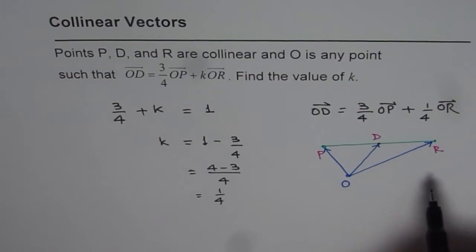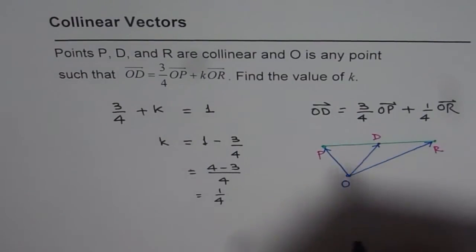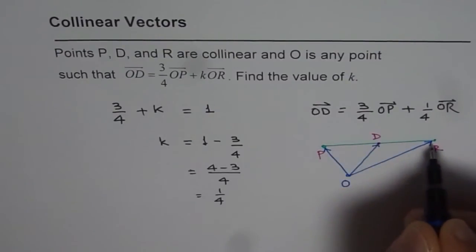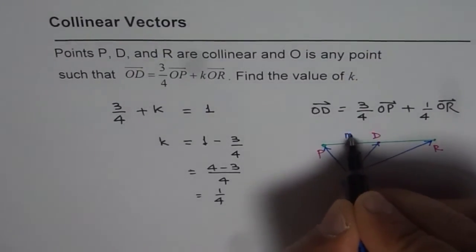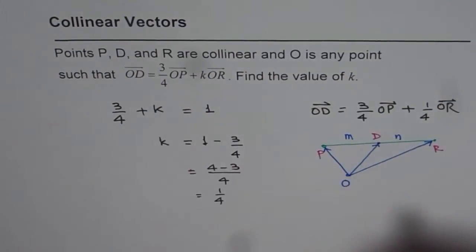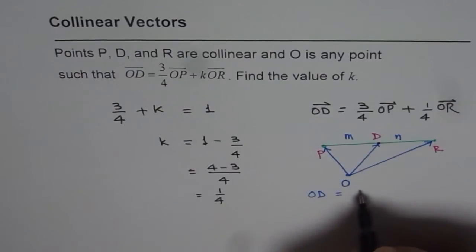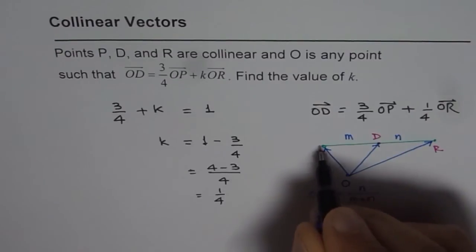In general, the formula is: if point D divides PR in the ratio M to N, then we can write OD as equals to N over M plus N times OP...